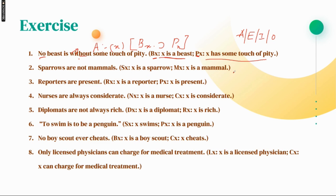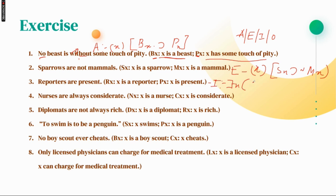Next question: 'Sparrows are not mammals.' This converts to 'No sparrows are mammals' — E proposition. You write: universal quantifier X, then SX horseshoe negation MX. So this is your E proposition. Next: 'Reporters are present.' This will be I proposition — 'Some reporters are present' — it cannot be all reporters. So: existential quantifier X, RX dot PX. In this case you use dot.